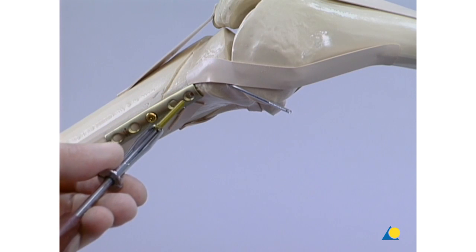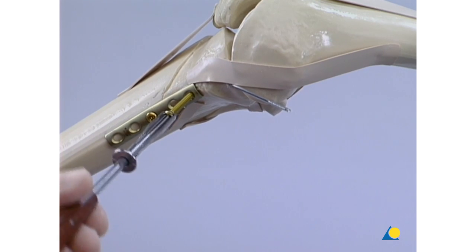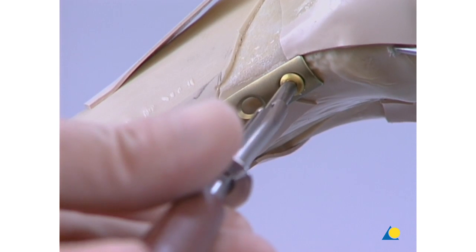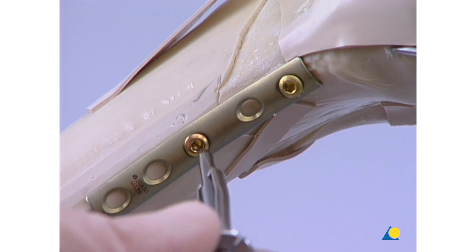Next, a cortex screw is introduced through the most proximal plate hole. After placing the most proximal screw, the first screw will need to be re-tightened.